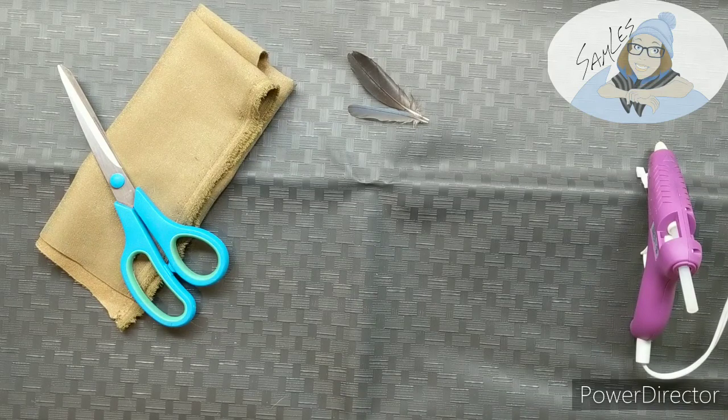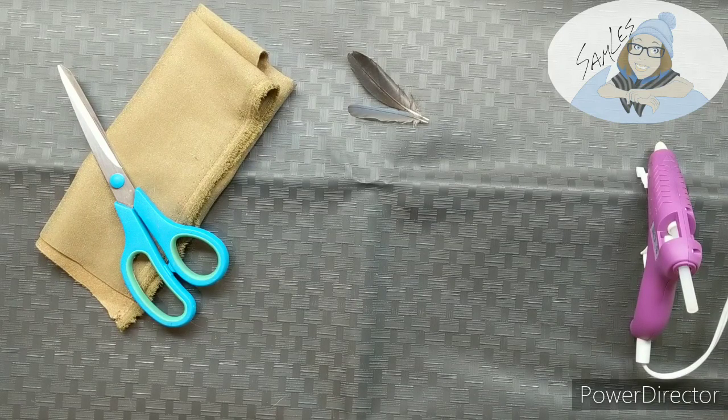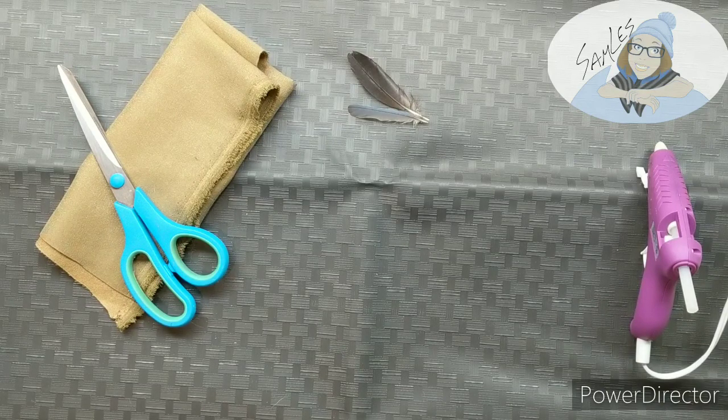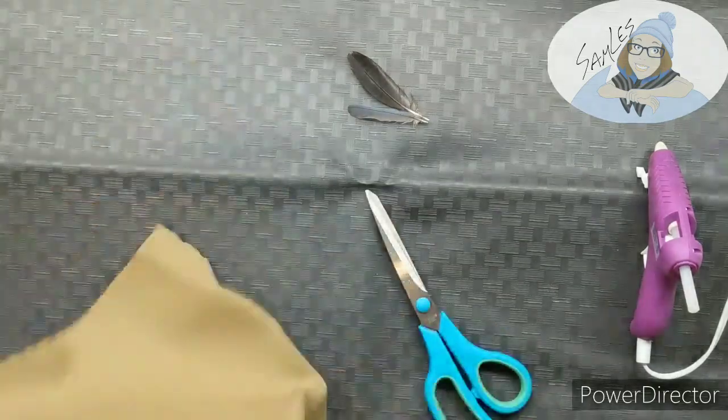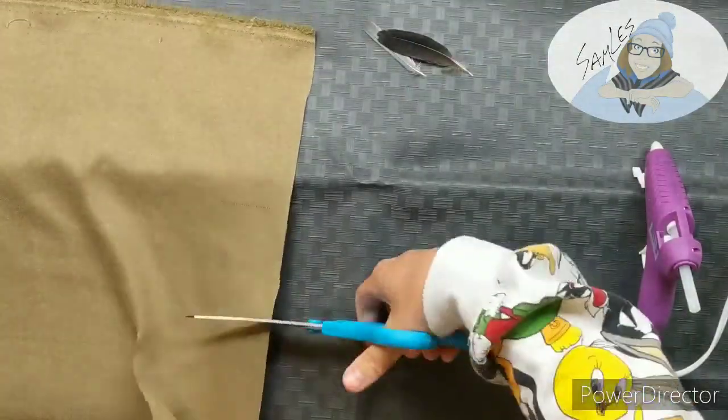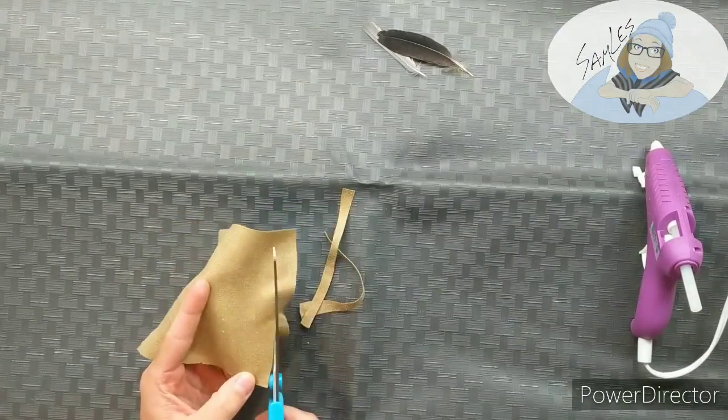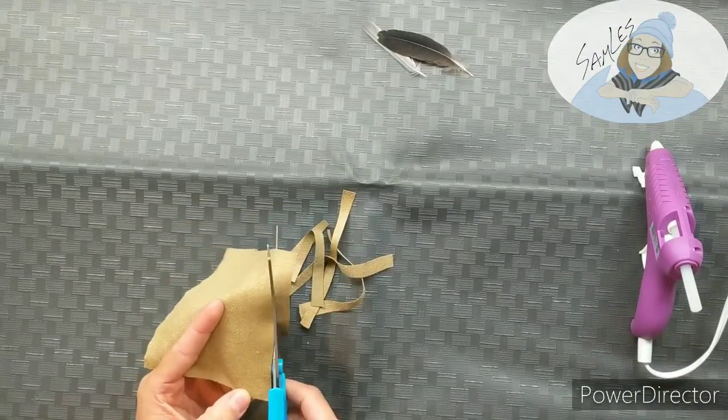You will need some good scissors, some solid fabrics that won't tear or fray easily, maybe a cotton stretchy shirt or something. You'll need some glue. I recommend hot glue. You could use fabric glue. You will also need some stuffing for later this week. You can have some feathers or buttons if you want.